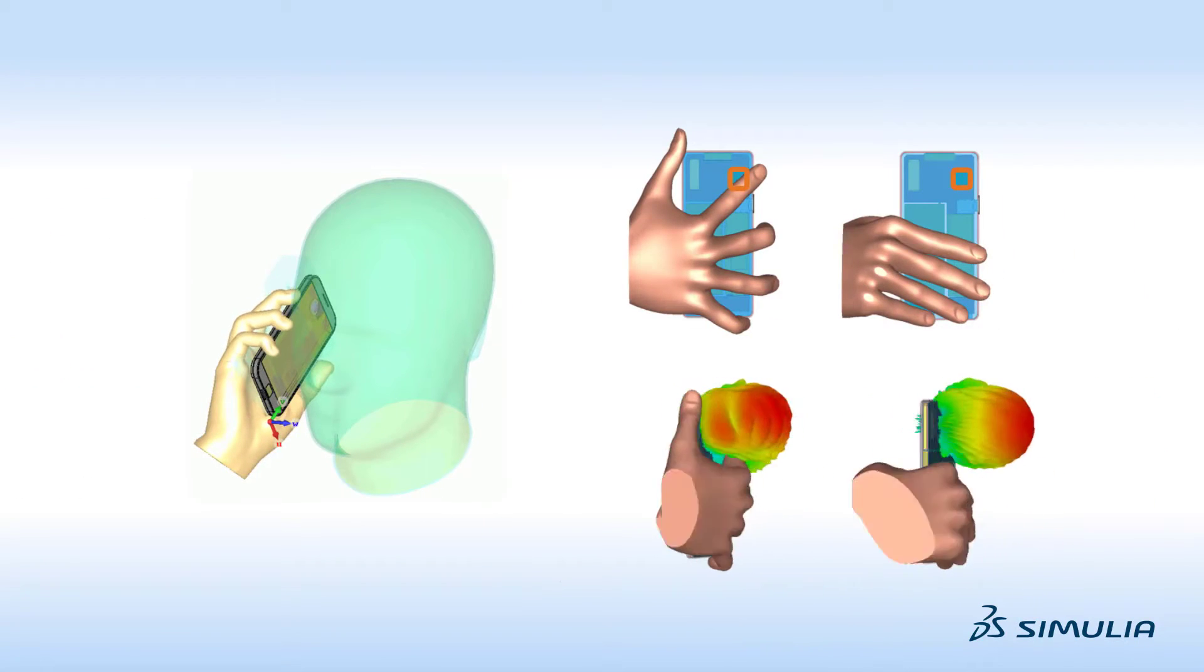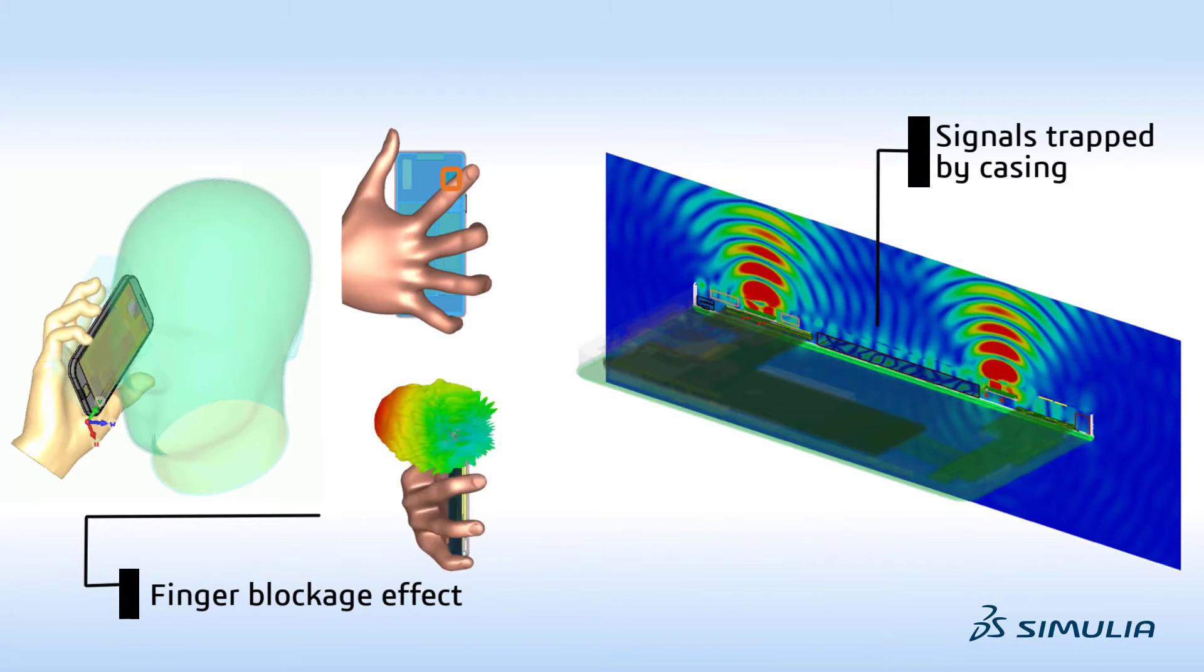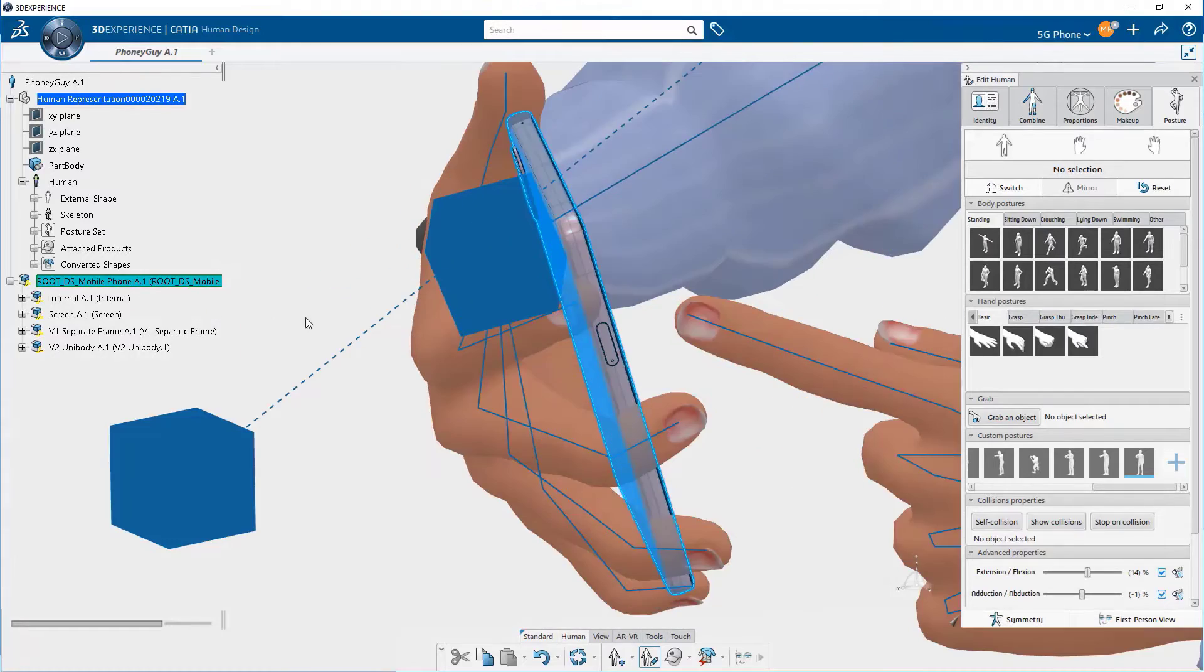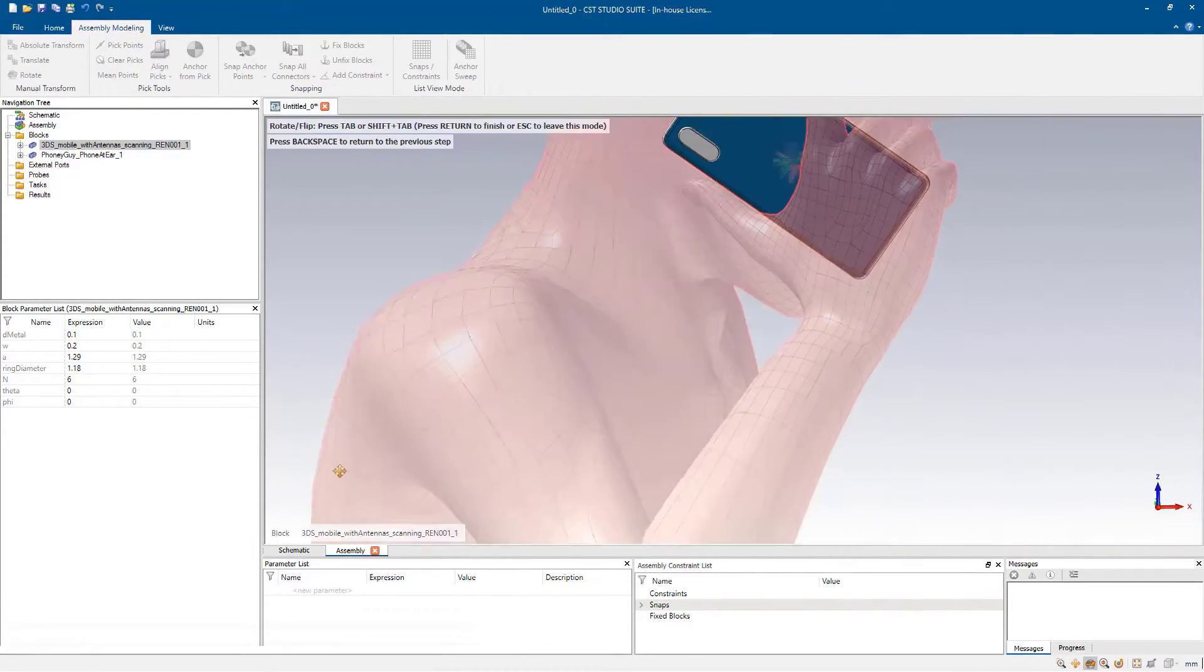Assess the impact of various in-use conditions on antenna signal performance, such as device holding patterns and casing materials, and ensure the device meets the various industry and safety standards such as power levels and spherical coverage.